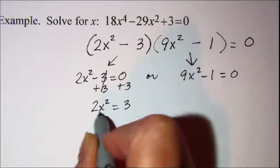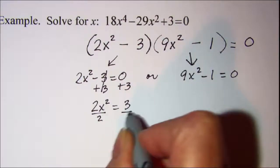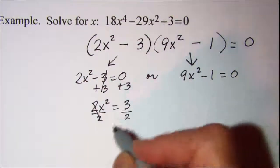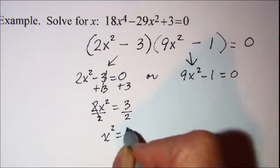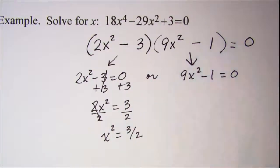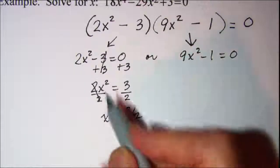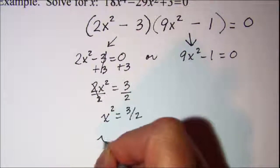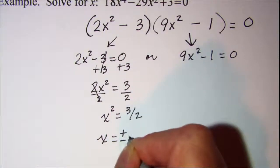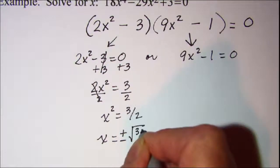Then isolating the x squared by dividing both sides by 2. These will cancel. x squared is equal to 3 halves. And then square root both sides and that gives me x is equal to plus or minus the square root of 3 halves.